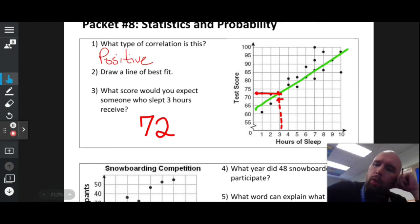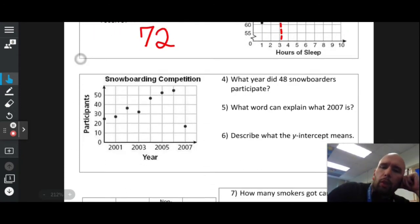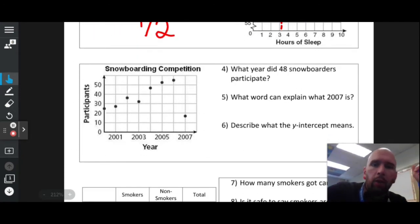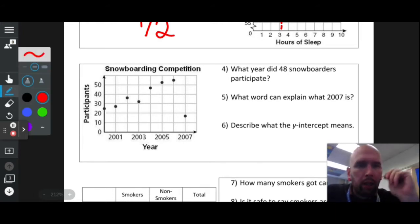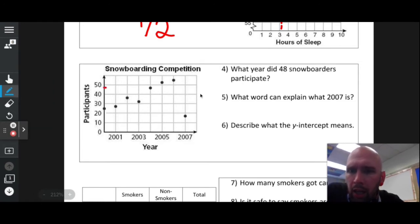Snowboarding competition: what year did 48 snowboarders participate? Here are the participants, so 48 is going to be somewhere along that line. That seems to line up with that dot right there, which lines up with that year between 2003 and 2005. That would be 2004.